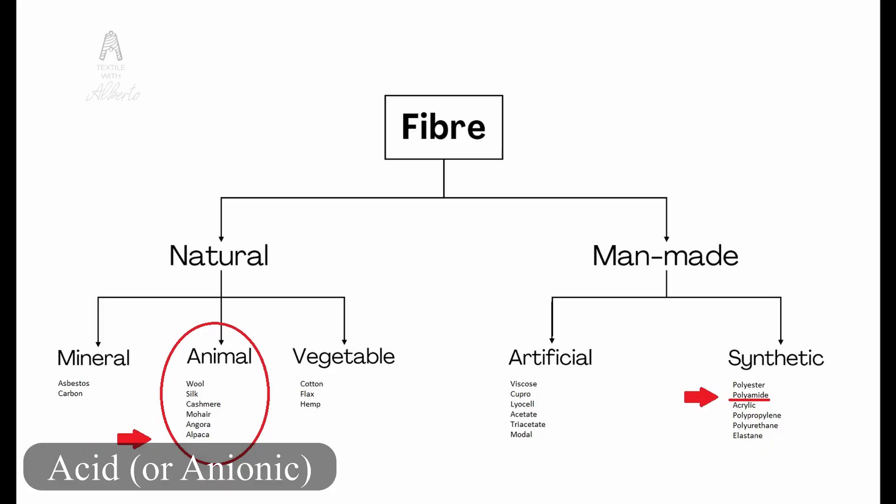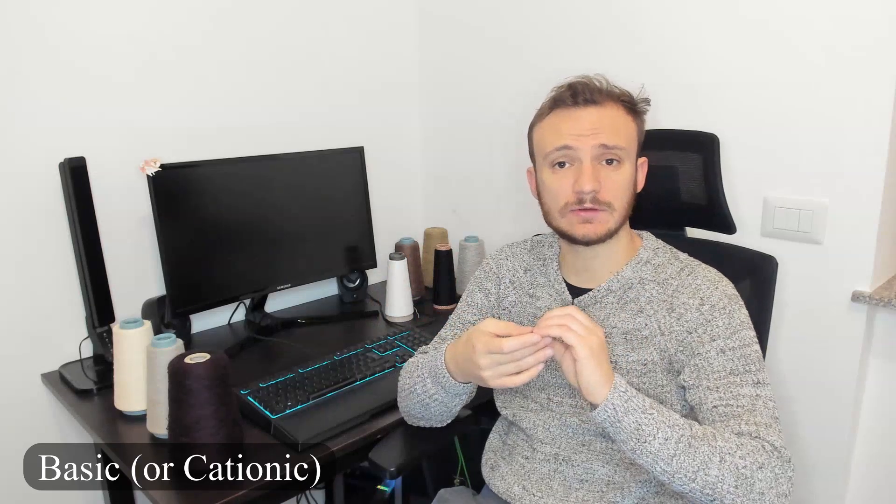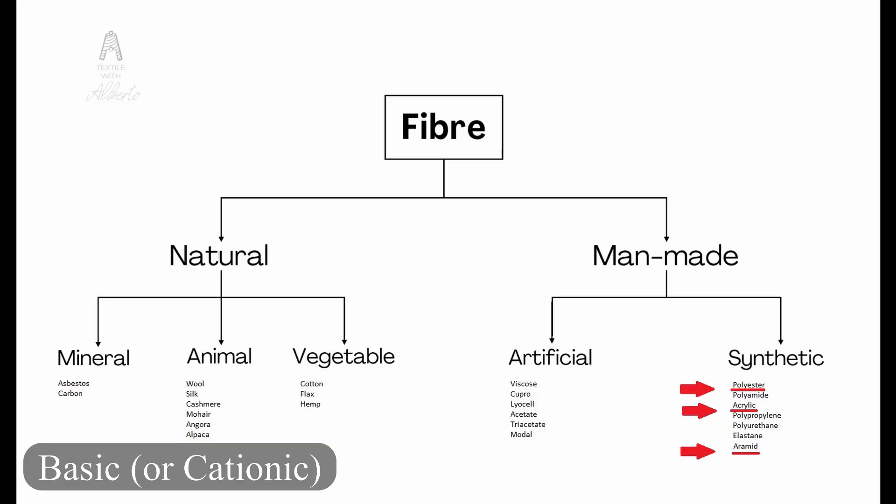Acid or anionic dye stuffs are normally used as pre-metallized or non-pre-metallized for protein fibers such as wool, silk, cashmere, and polyamide. Then we have basic or cationic dye stuffs used for acrylic or modacrylic, aramid fibers such as meta-aramid, and cationic polyester.